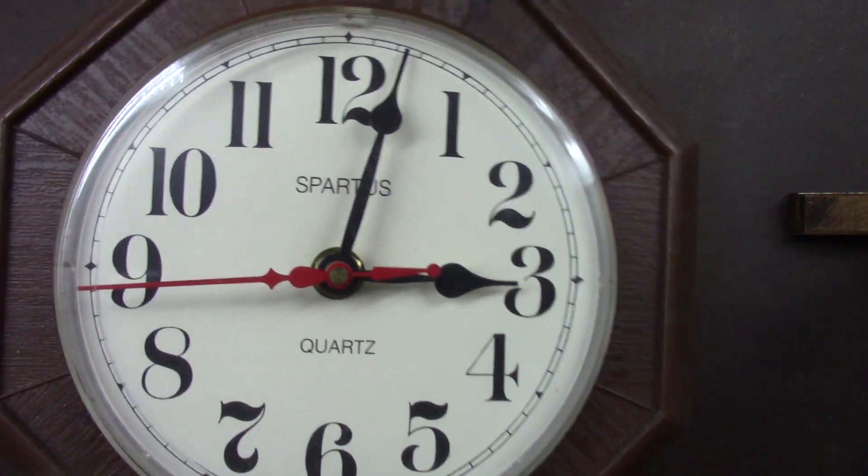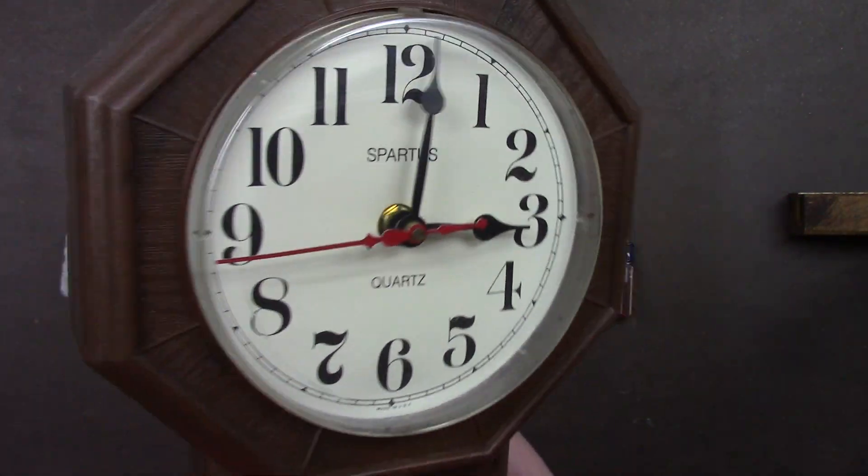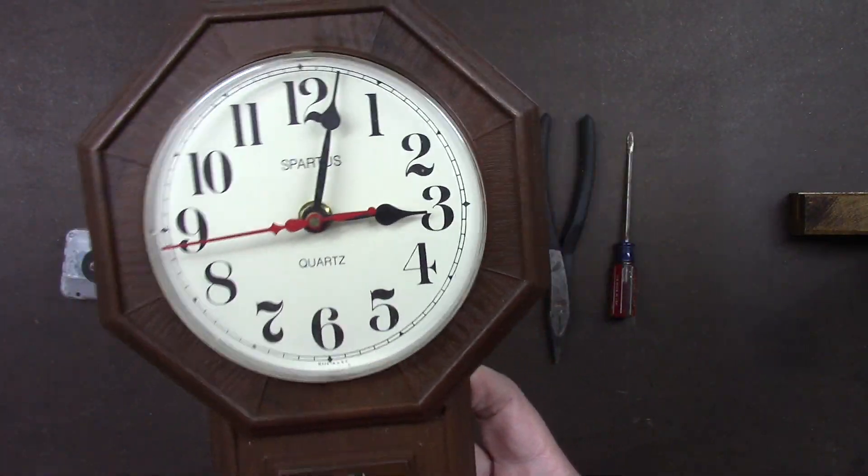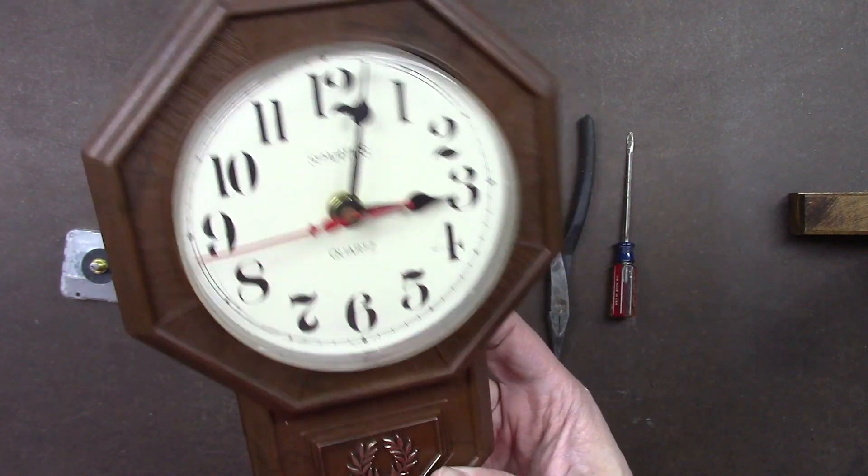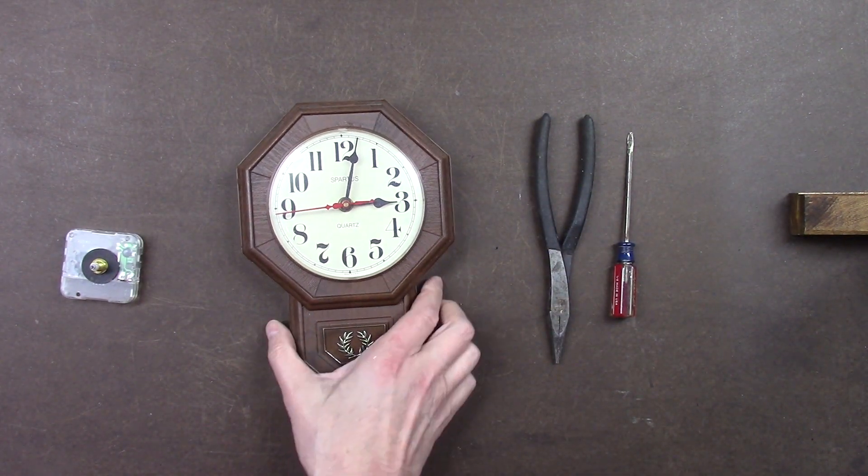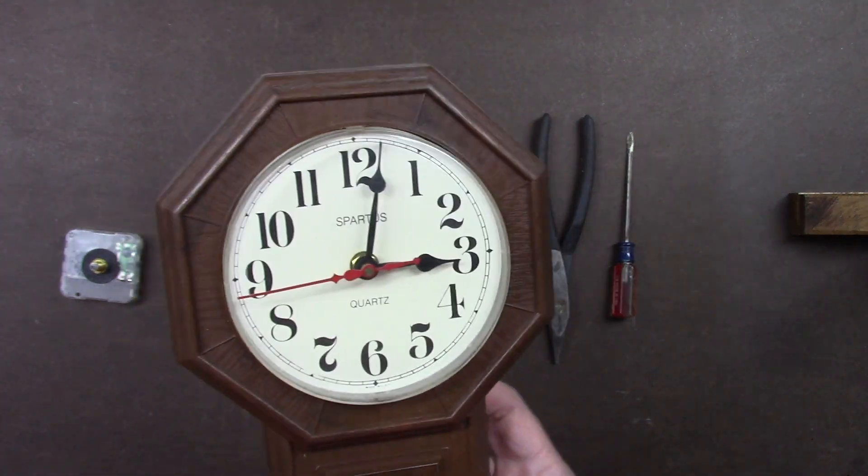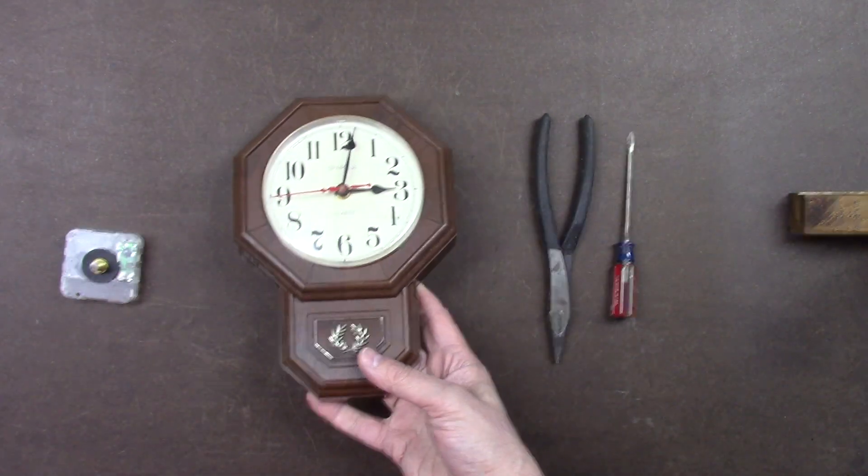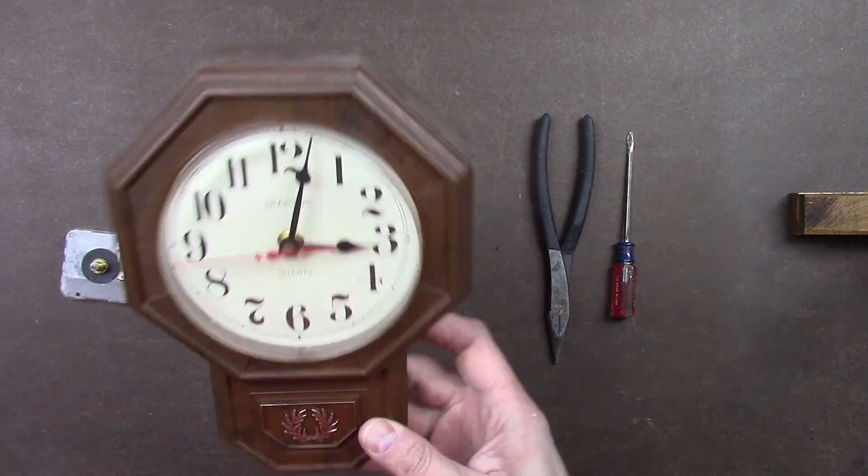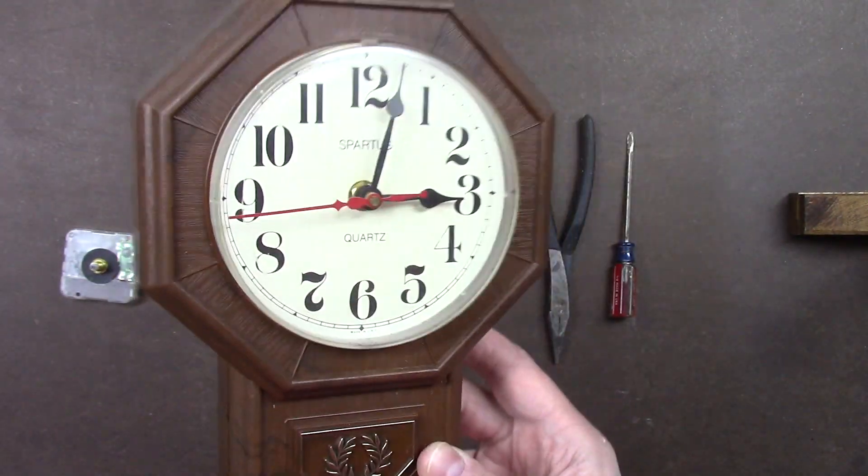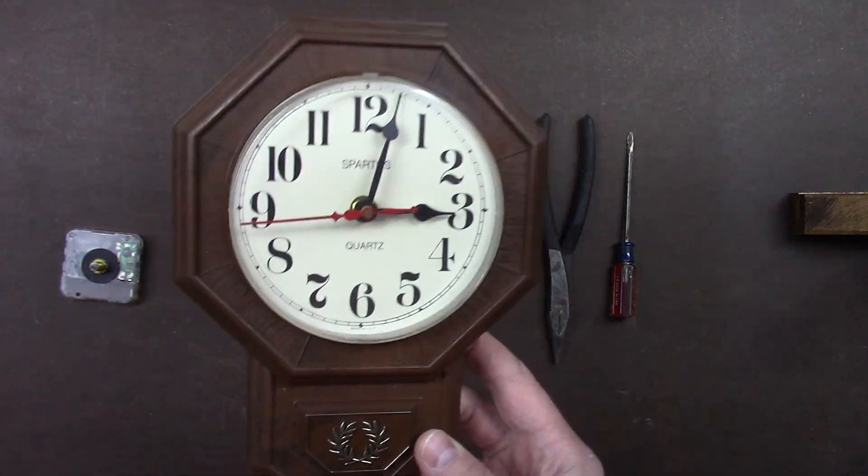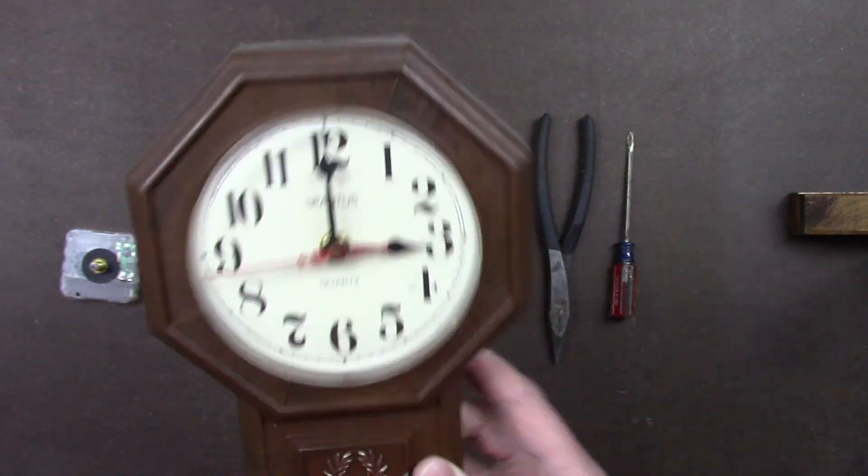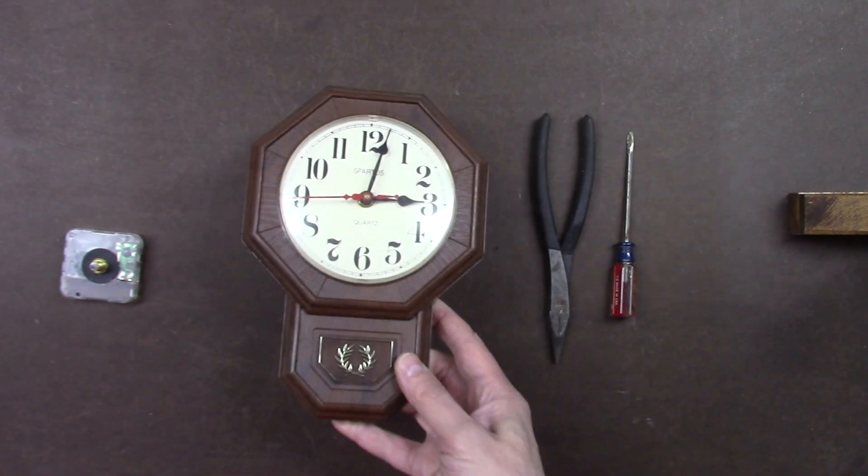This is one of those old vintage Spartus quartz clocks. Let me know in the comments if you had a Spartus clock movement in your time and what you think of them, if they're good clocks or not. The only thing is Spartus has been out of business some years now. I don't know who owns the trademark now, but they're not in production anymore. Some of the old timers like the old style of the Spartus clocks, and that's why this person wants to get this clock running again in the same clock cabinet.